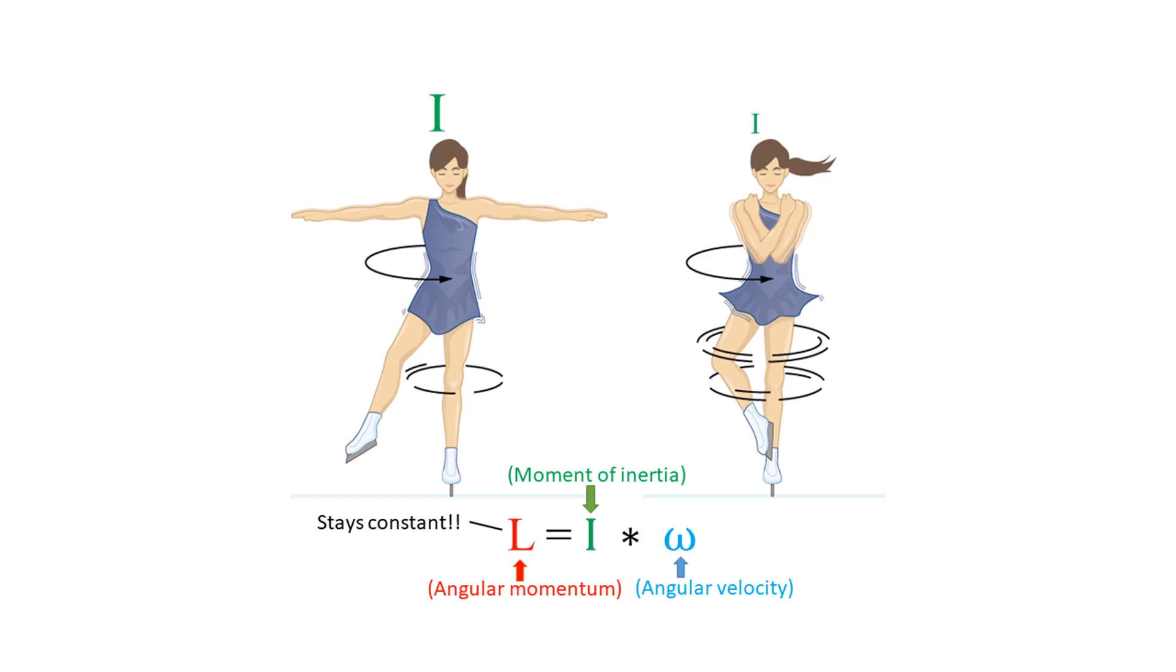Therefore, when the skater decreases their moment of inertia by pulling in their arms, their angular velocity must increase to compensate.